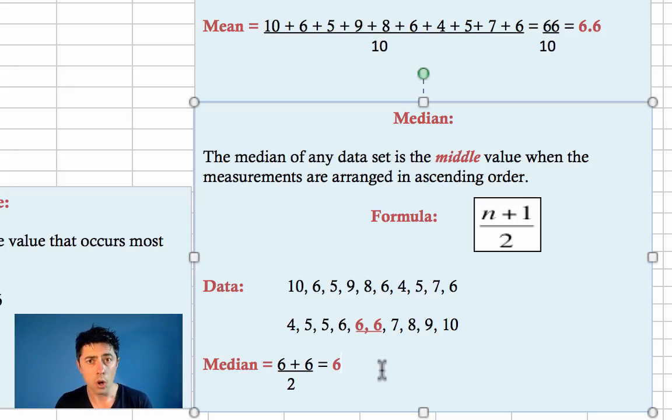It's the very same if you have an odd number in your data set. For example, if I drop the 10 here, there's 9 numbers. So 9 plus 1 is 10, divided by 2, so that'll be the 5th number. 1, 2, 3, 4. So 6 is the 5th number in ascending order or descending order.